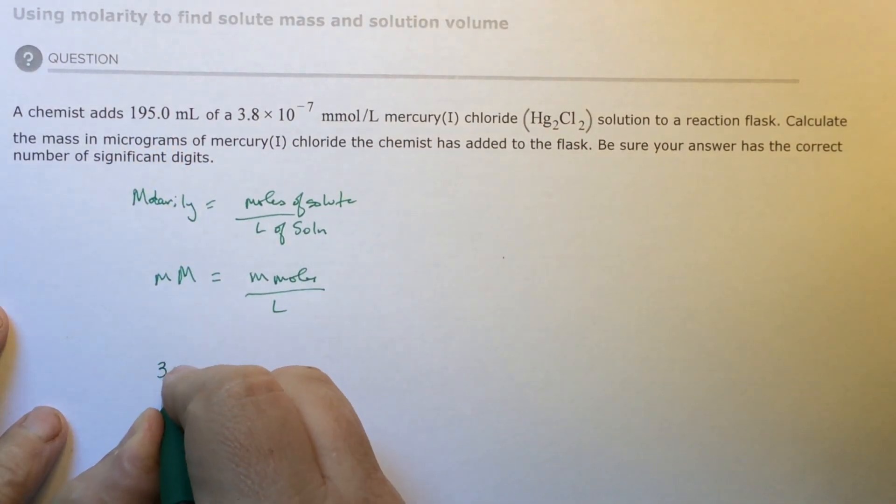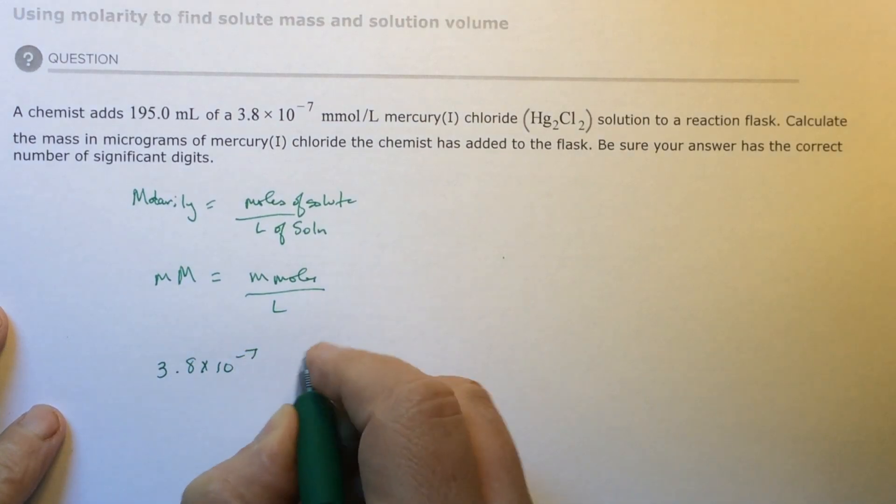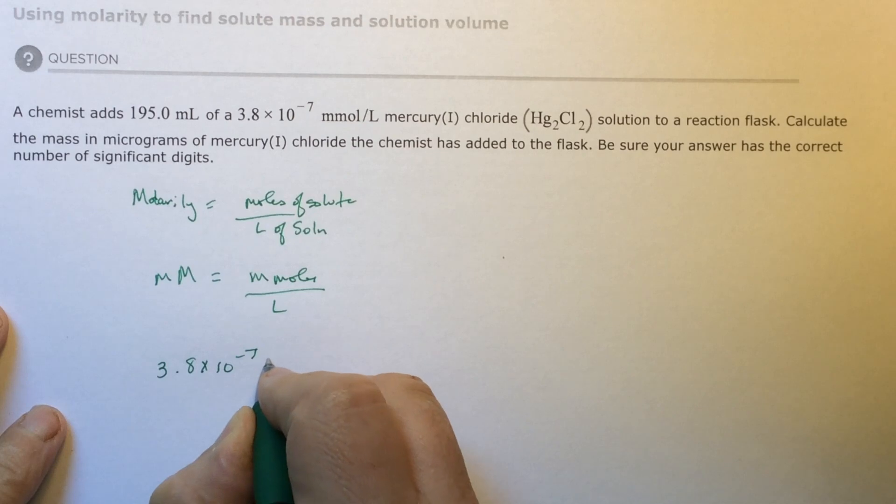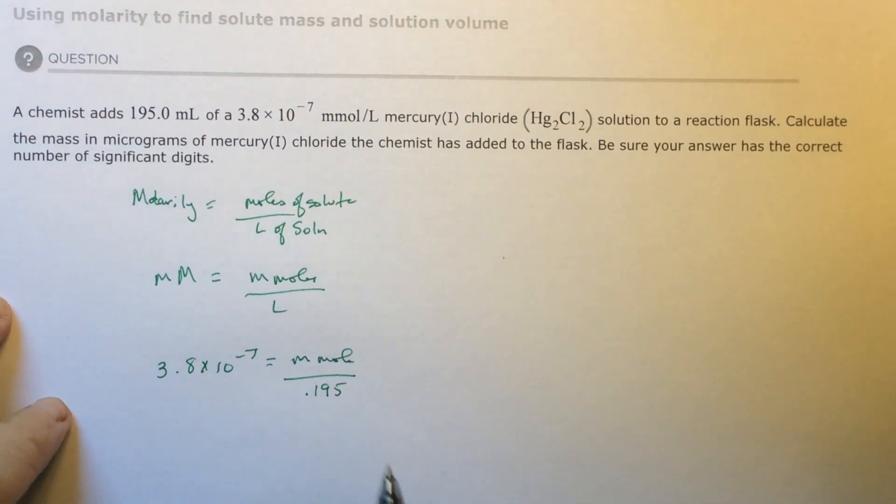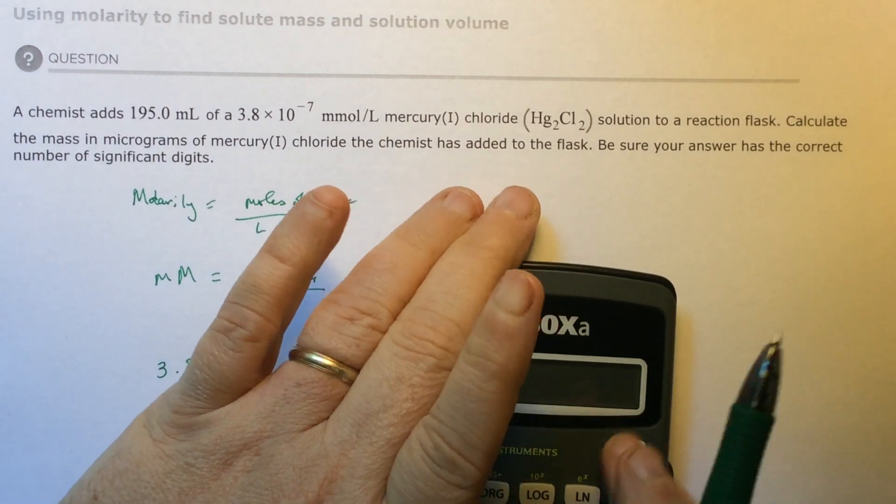So this is going to be 3.8 times 10 to the negative 7 equals micromoles over 0.195. To solve for micromoles, I'm going to multiply by 1.95.